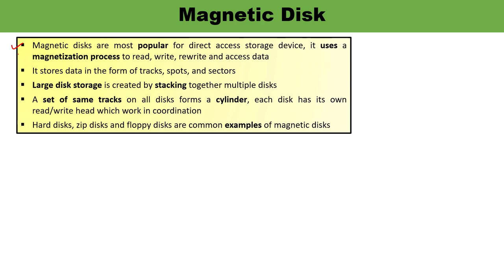It uses a magnetization process to store, write, read, access, and rewrite the data. It stores data in the form of tracks, spots, and sectors.